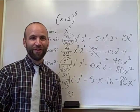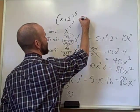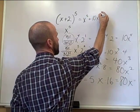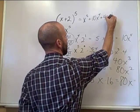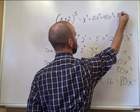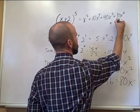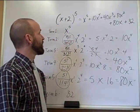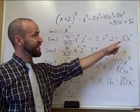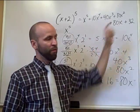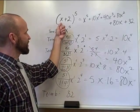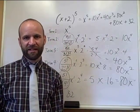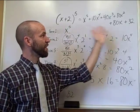So the final expansion of x plus 2 to the fifth power is: x to the fifth power, plus 10x to the fourth power, plus 40x to the third power, plus 80x squared, plus 80x, plus 32. Notice this works out in descending order — one term of every degree from 5 all the way down to the constant term. This will always be the case for a linear binomial raised to a power.